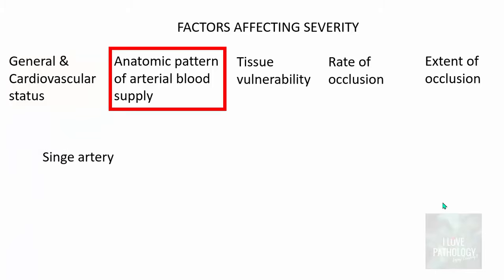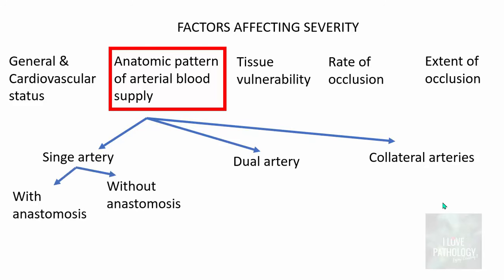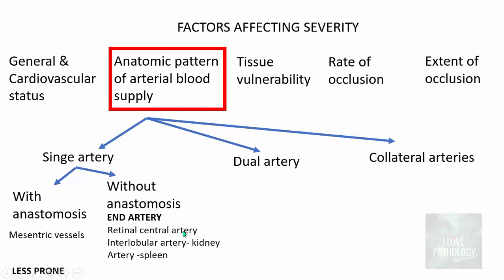The anatomical pattern of arterial blood supply depends on whether we are dealing with a single artery, dual artery, or collateral arteries, and whether anastomoses are present. A single artery with extensive anastomosis, as in mesenteric vessels, is less prone to severe infarction. Arteries without anastomosis — called end arteries, such as the retinal central artery, interlobular artery of the kidney, or splenic artery — are much more prone to severe tissue death.